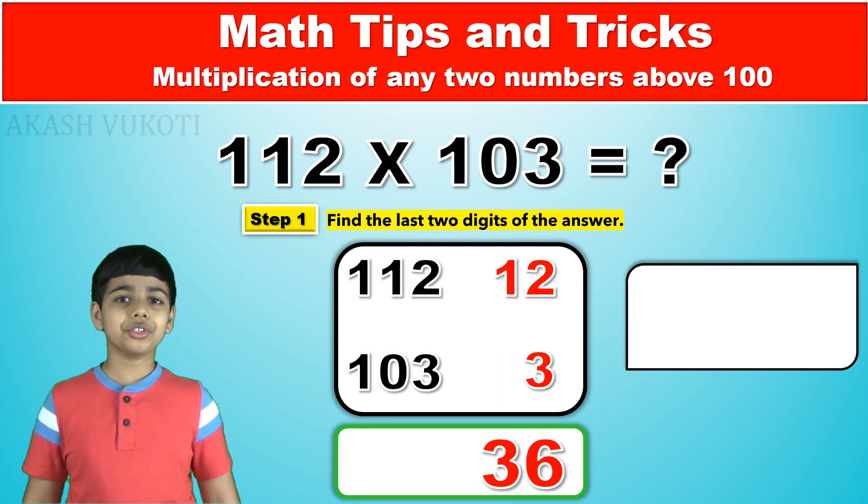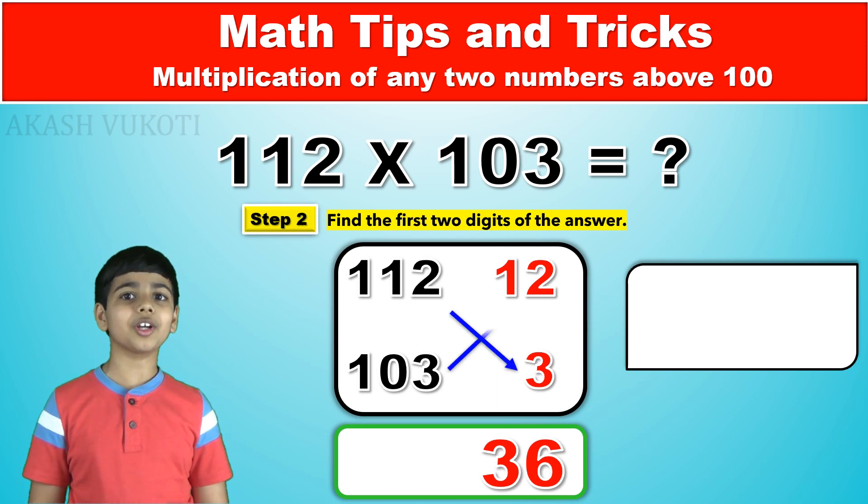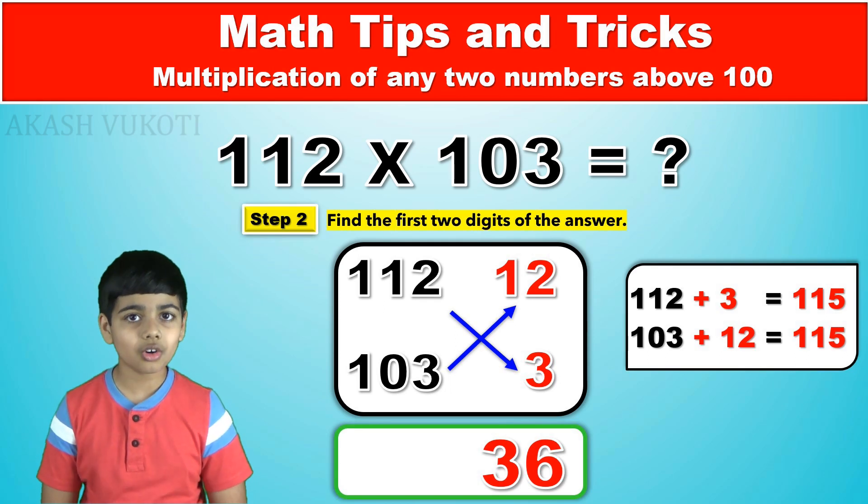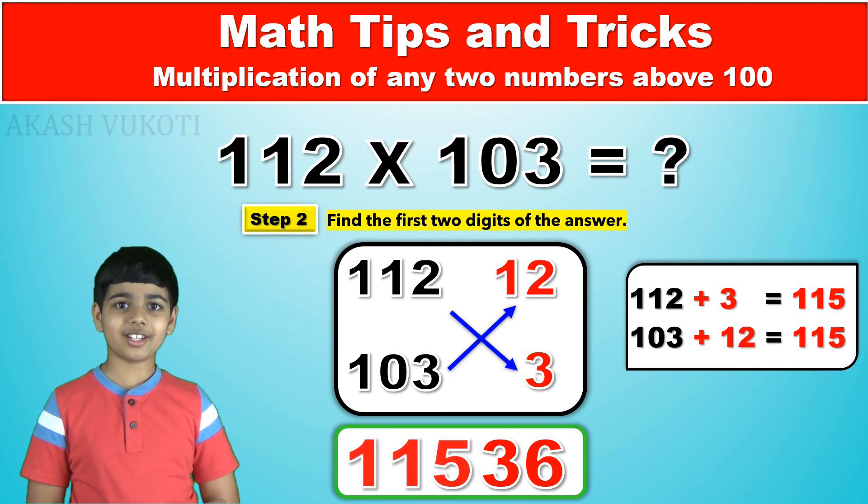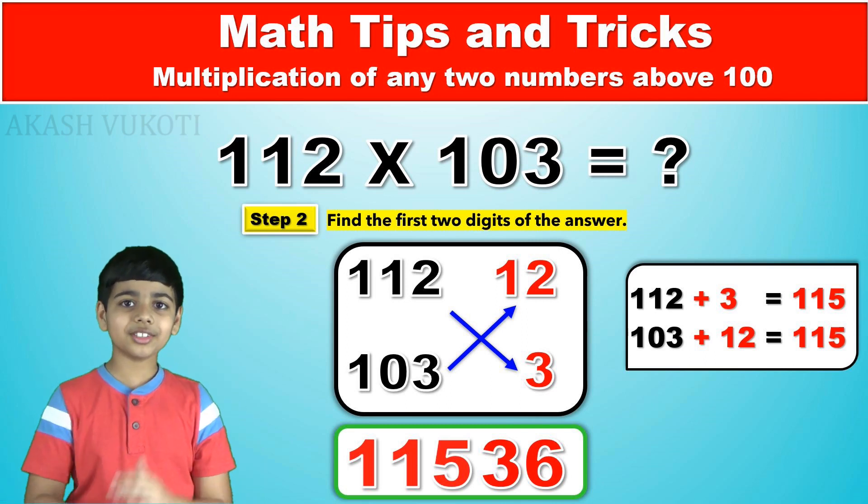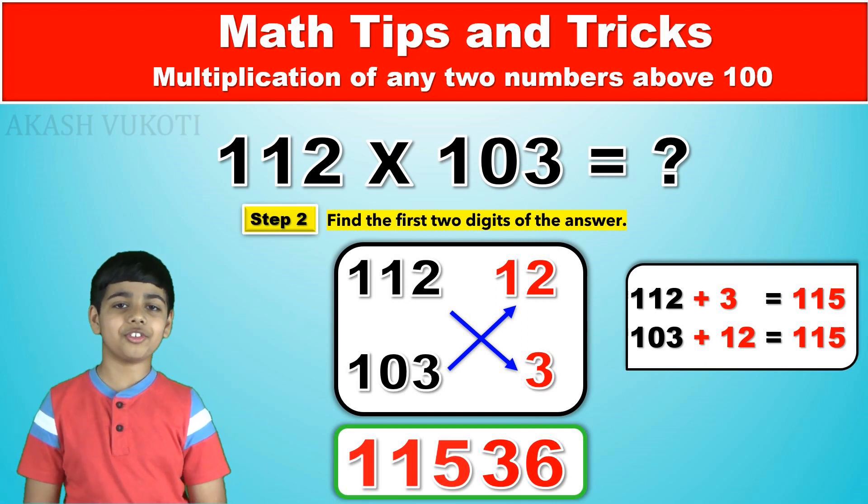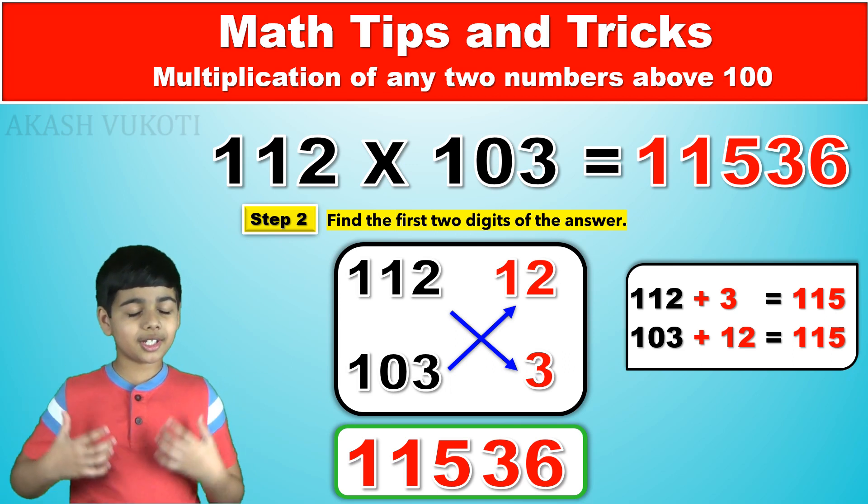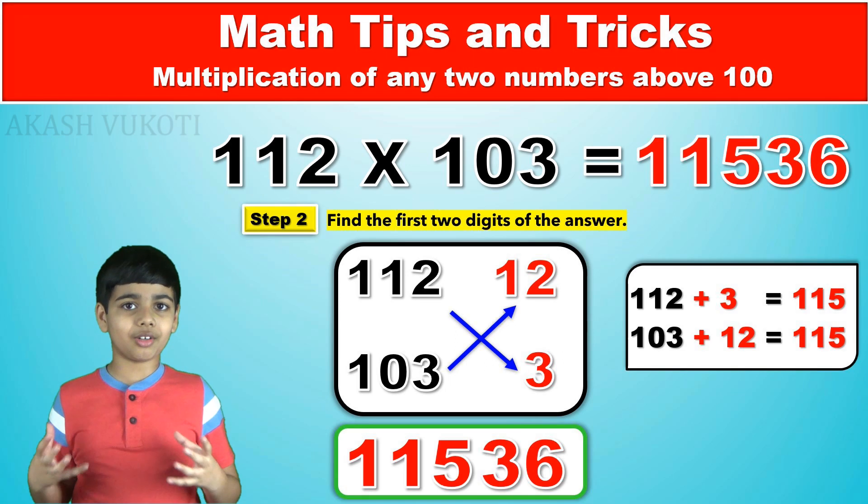These are the last two digits of our answer. Next, we cross-add the numbers from the differences and get 115, which are the first three digits of our answer. 112 times 103 is, final answer, 11,536. Now, you know how to multiply numbers near to and above 100.